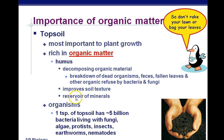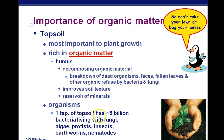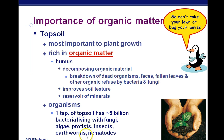Humus improves soil texture and is a reservoir of minerals with lots of organic material. The organisms inside are tremendous in number — one teaspoon of topsoil contains about 5 billion organisms, including fungi, algae, protists, insects, bacteria, and nematodes like worms.